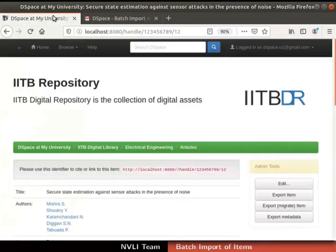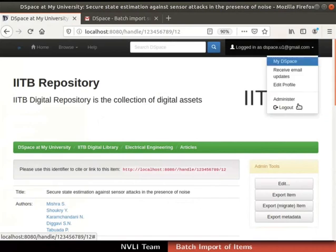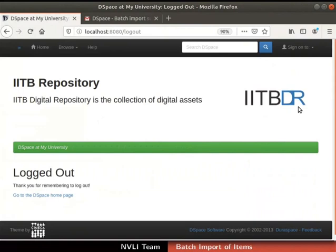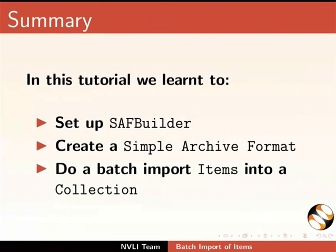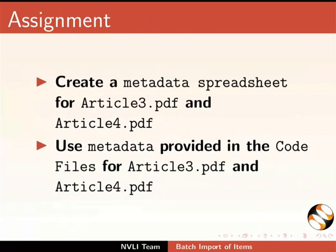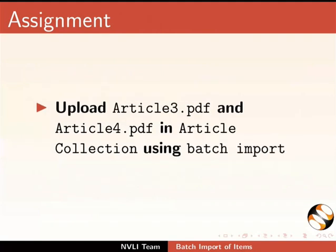Switch back to DSpace and log out from the DSpace interface. This brings us to the end of this tutorial. In this tutorial, we learned to set up SAF Builder, create simple archive format, and do a batch import of items into a collection. As an assignment, create a metadata spreadsheet for article3.pdf and article4.pdf using the metadata provided in the code files, then upload article3.pdf and article4.pdf in the article collection using batch import.